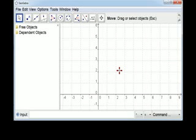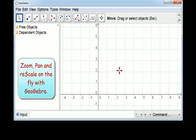This is a Geographer Quickie to show how to zoom, pan, and rescale on the fly, that is without changing the active tool.